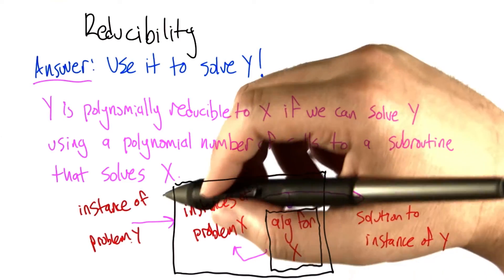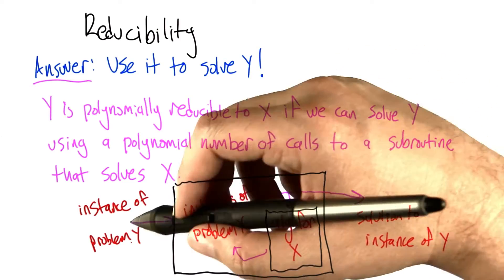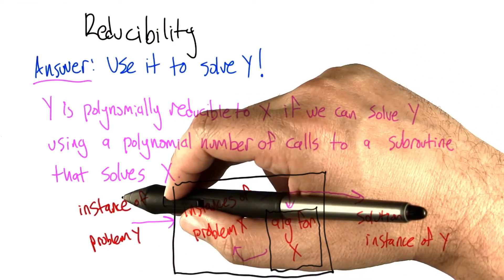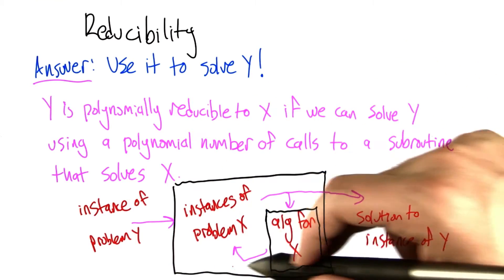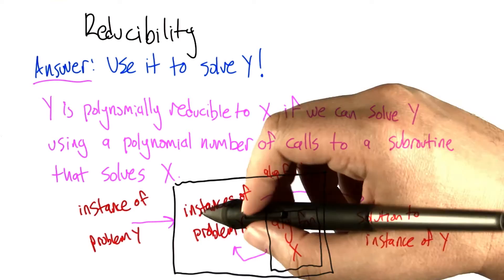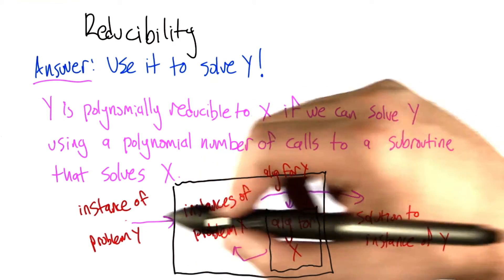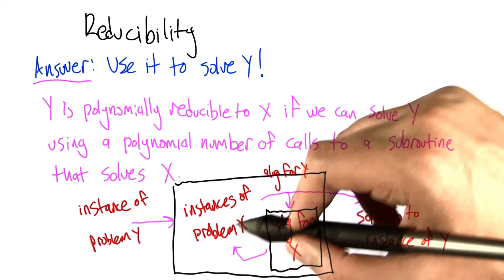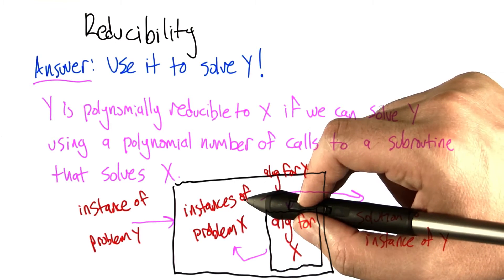So the basic picture that you can have in your head is something like this. Imagine that we want to solve an instance of problem y. We can imagine building a solution algorithm for y, where an instance of problem y gets transformed in some way to an instance of problem x, or maybe multiple instances of problem x.